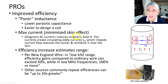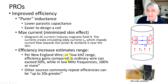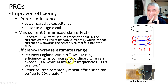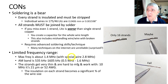The efficiency increase estimates vary widely. From a company called New England Wire: 'In a low kilohertz range, efficiency gains compared to ordinary wire can exceed fifty percent, while in low megahertz frequencies, a hundred percent or more.' That sounds like marketing to me — an engineer would give exact figures with a defined range. Other sources, which seem to be an internet phenomenon where everyone quotes each other, say efficiencies of up to 20 times or greater. So those are the pros — now let's talk about the cons.